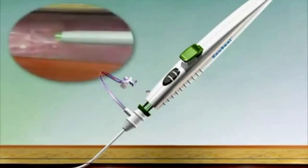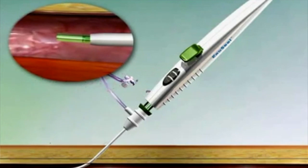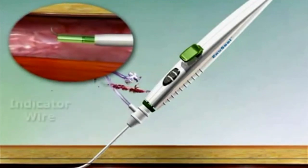The indicator wire will automatically deploy when the wire cowling locks into position against the device handle and a click is heard.